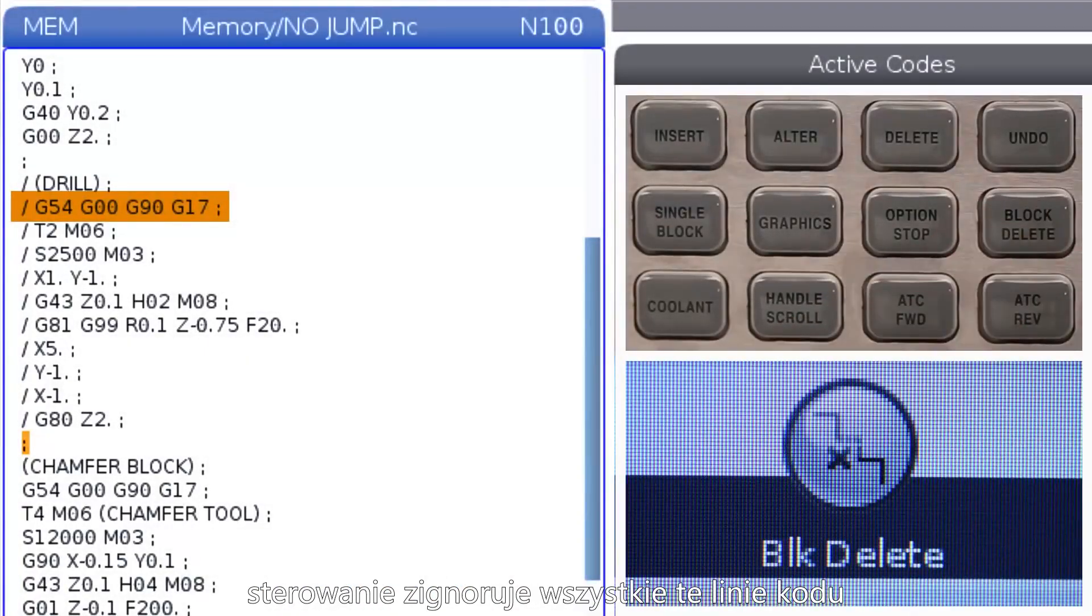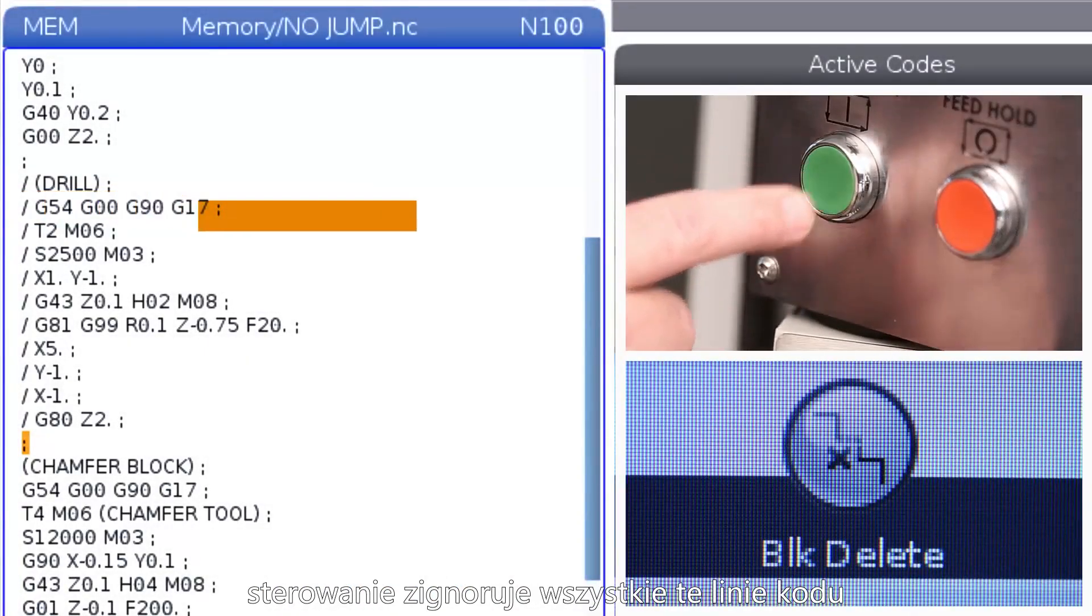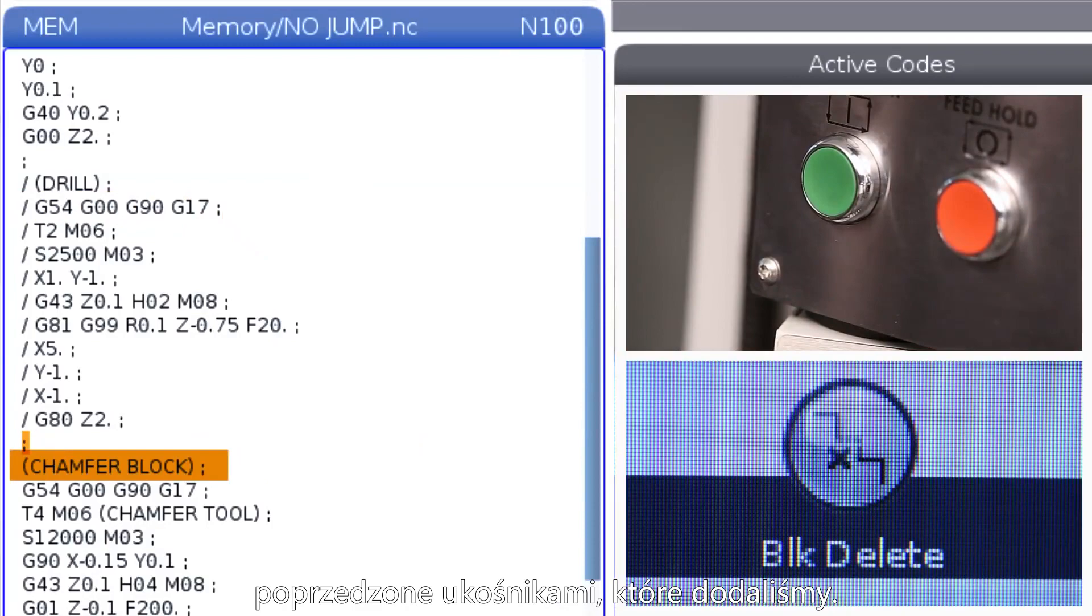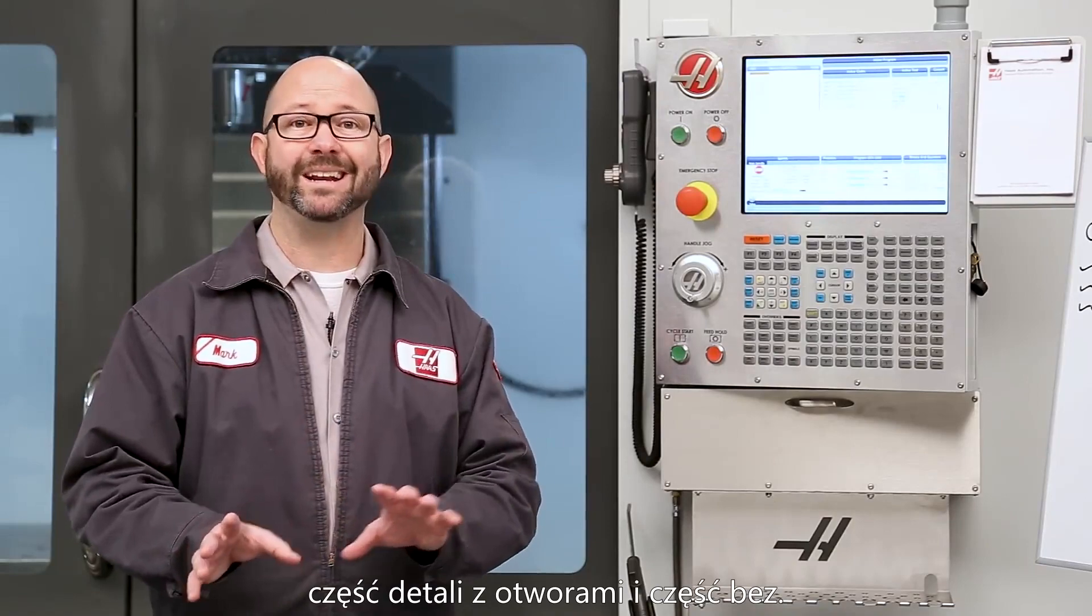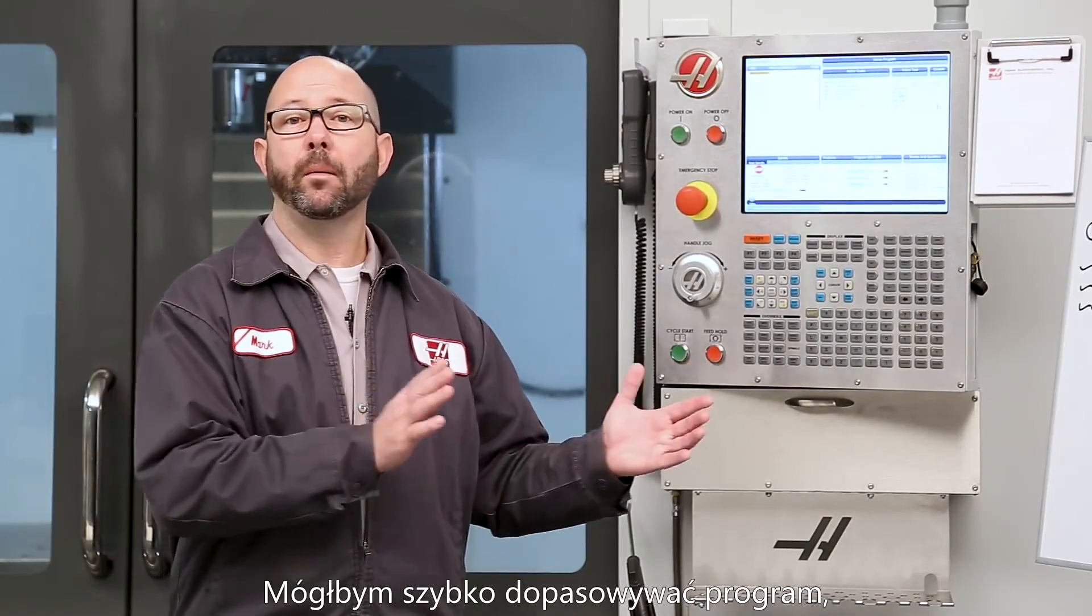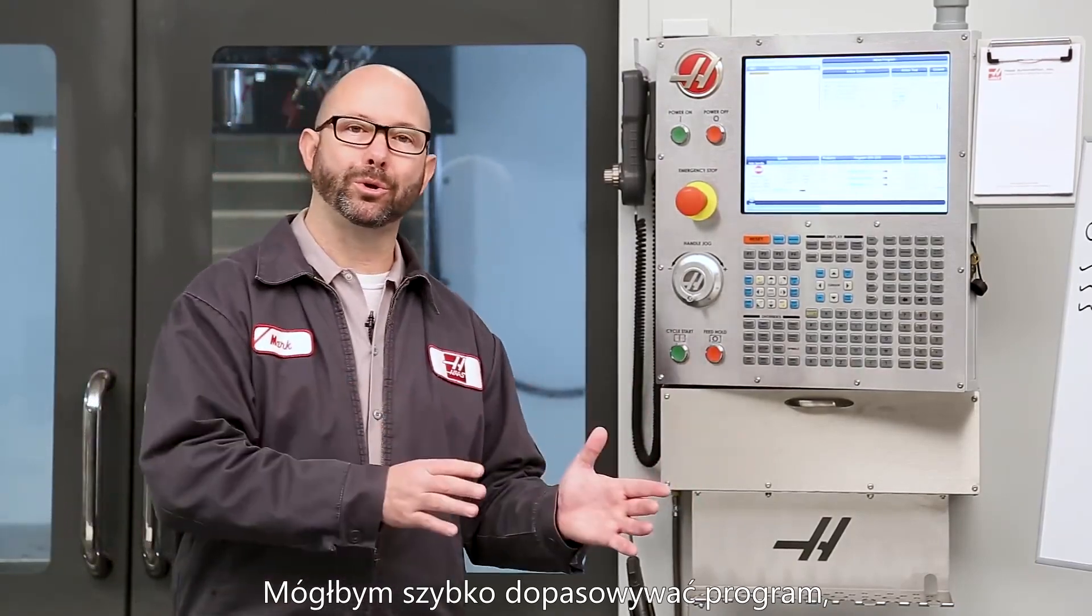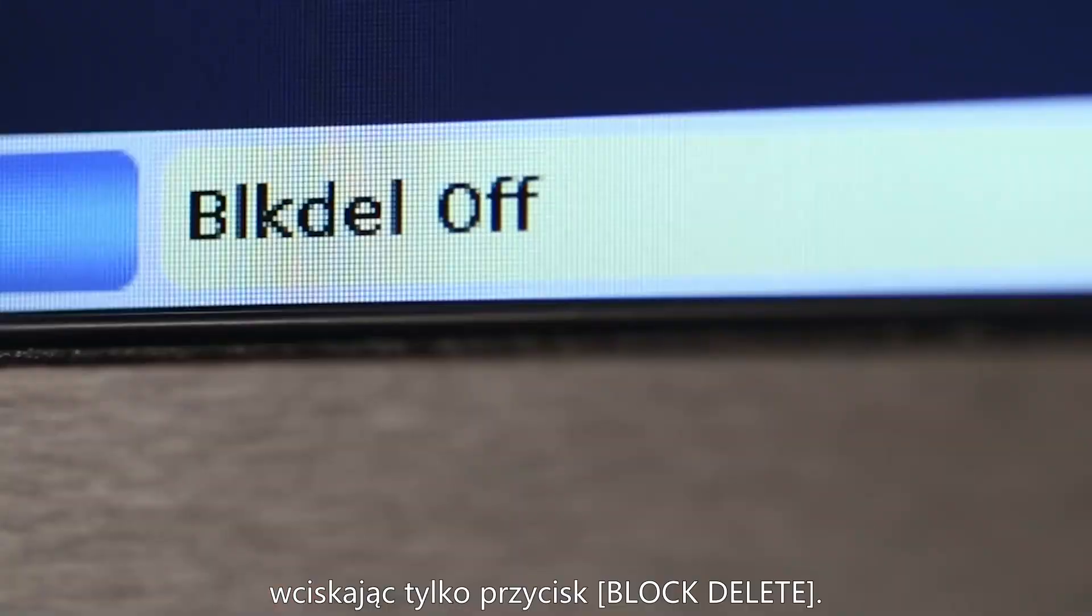In this example, if we press Block Delete, then the control would ignore all of these lines of code with the forward slashes. This would be great if I wanted to make some parts with holes and others without. I could go back and forth between holes and no holes just by pressing Block Delete.